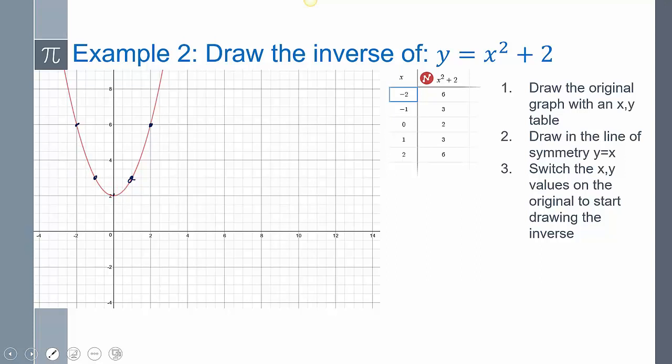Then, I just took them and I plot them on the graph. So I had 0, 2. Here's negative 1, 3. Here's negative 2, 6. 1, 3, and 2, 6. Then, drawing in that line of symmetry, so that's y equals x, this is going to help us imagine how this is going to reflect over.